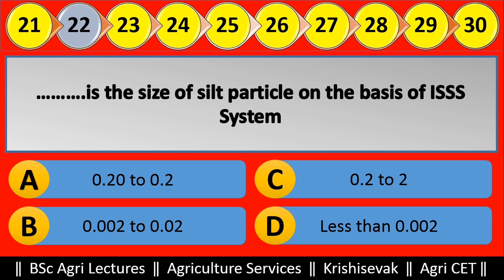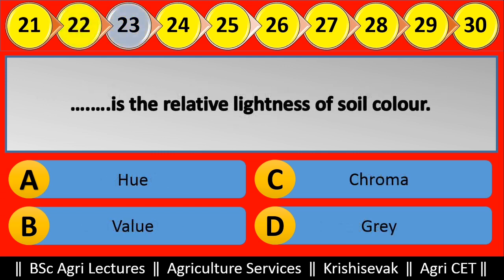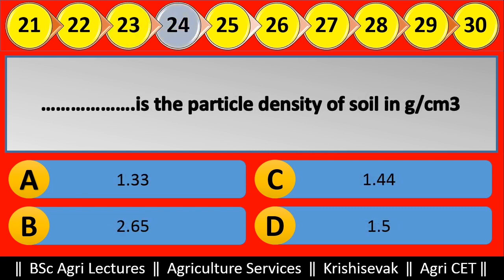Question 23: Blank is the relative lightness of soil color. Options are: (a) Hue, (b) Value, (c) Chroma, (d) Gray. Right answer is Value. Question 24: Blank is the particle density of soil in grams per centimeter cube. Options are: (a) 1.33, (b) 2.65, (c) 1.44, (d) 1.5. Right answer is 2.65, option B.